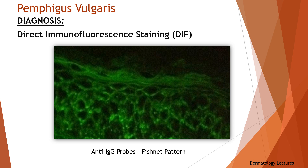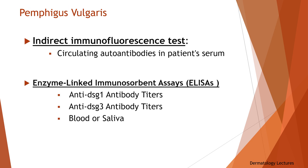Pemphigus is confirmed by direct immunofluorescent staining of perilesional skin biopsy sections to reveal IgG autoantibodies or complement on the cell surfaces of the keratinocytes. In pemphigus vulgaris, binding of pathologic IgG is demonstrated using fluorescein-labeled anti-IgG probes, producing a fishnet pattern of staining. In most cases, circulating antibodies can be detected by indirect immunofluorescence blood test, which detects circulating autoantibodies in the patient's serum and may reflect treatment effectiveness. Specific anti-desmoglein-1 and anti-desmoglein-3 antibody titers can also be measured in blood or saliva by enzyme-linked immunosorbent assay.